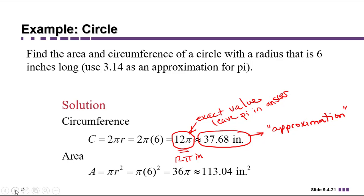But we don't want to leave pi in our answer only because we were asked not to. We're going to replace that with 3.14, multiply it times 36, and we get 113.04 square inches. Notice the circumference was a linear measurement, just inches, and area is measured in square units, square inches.